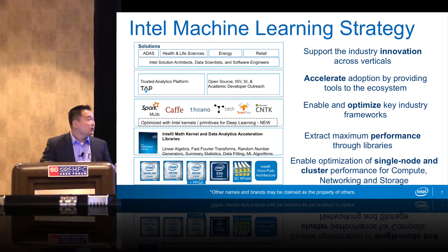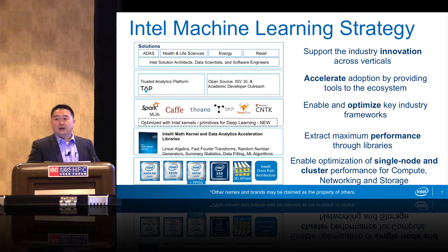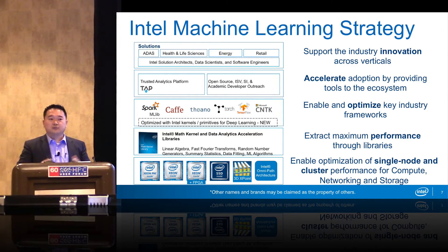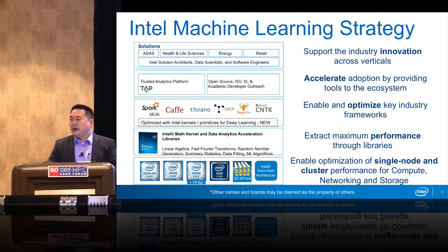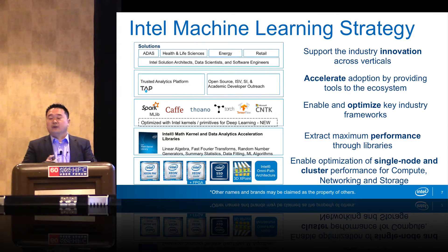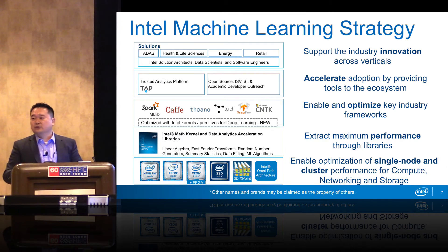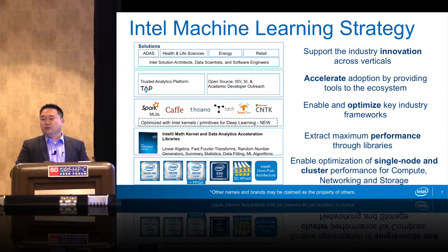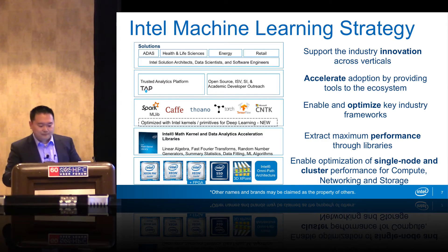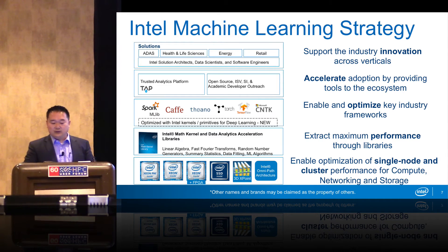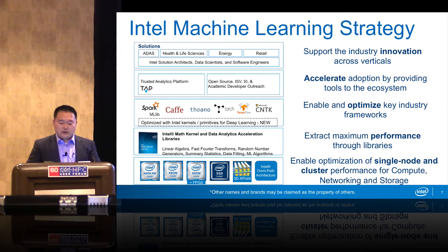So what's our machine learning strategy? Within solutions, we want to support industrial innovation through verticals such as ADAS or Autonomous Driving, health and life sciences, energy, and retail. For example, we're supporting Levi's on IoT and machine learning in their retail space — anticipating customers, heightening the retail experience, and understanding which pants would fit better as well as stocking inventory. We're also accelerating adoption by providing tools to the ecosystem with our Trusted Analytics Platform, or TAP, open source work with our ISVs, system integrators, and academic developer outreach.